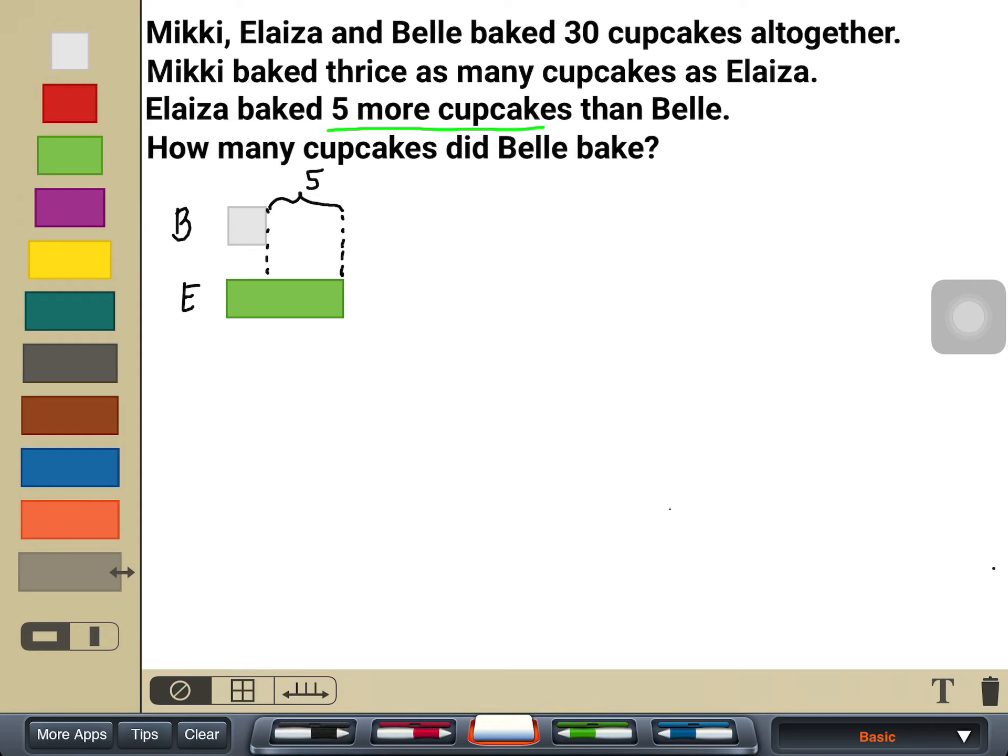Now, aside from that, we have to model also the relationship between Mickey's cupcakes and Eliza's cupcakes. It says here that Mickey baked thrice as many cupcakes as Eliza. Therefore, to make it look that Mickey has 3 times as many cupcakes as Eliza, we should be putting 3 bars of the same size to Mickey.